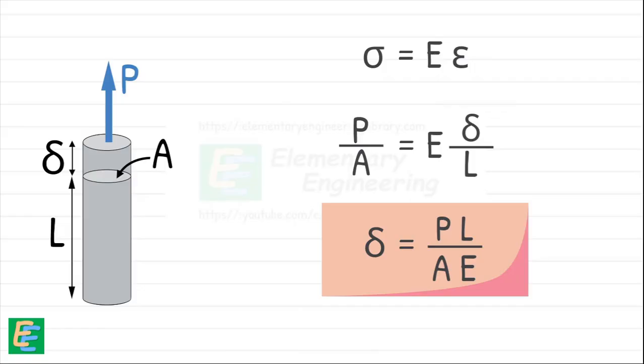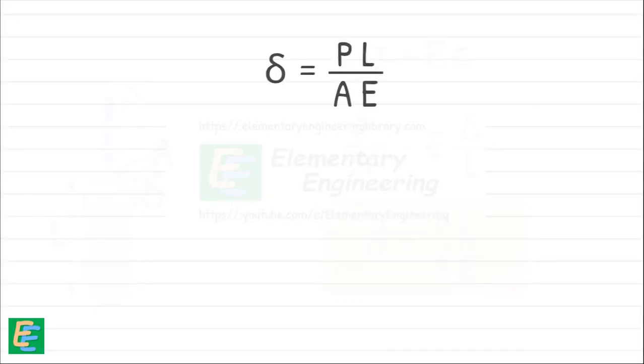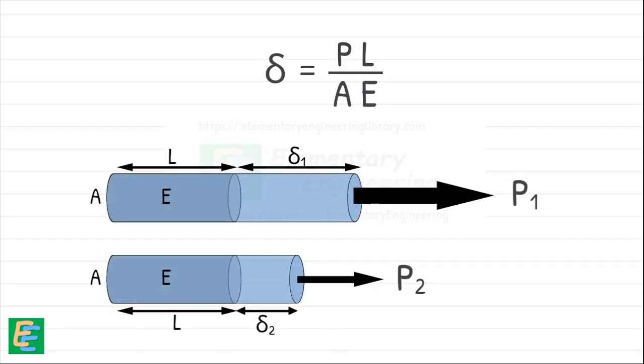A clean, powerful way to calculate how much an object stretches or shortens under an axial load. Let's quickly appreciate what this formula tells us. The change in length delta is directly proportional to the applied force. More force, more stretch.